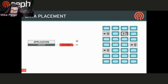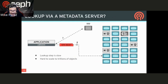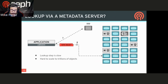So when we're writing these data objects, where does the data actually go? How does that get figured out? In legacy setups, you would typically have a lookup step, which would involve another network hop to go to a metadata server, and that metadata server would provide you the location of where the data should be written to.